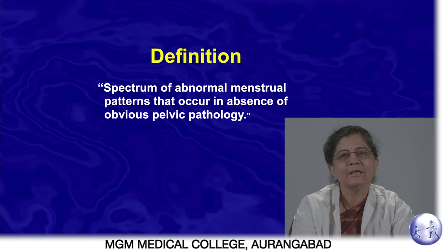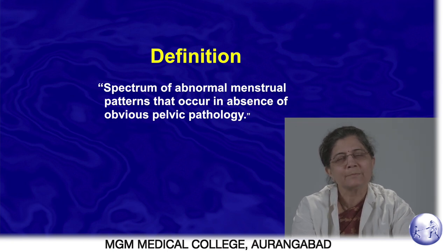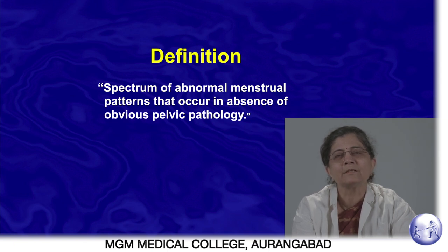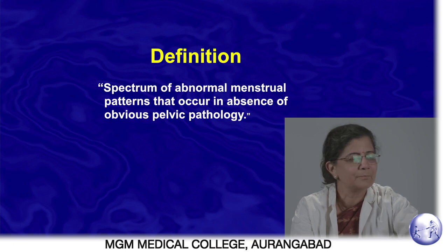This condition, DUB, can be defined as a spectrum of menstrual irregularities where there is no obvious cause detected by examination or investigation.